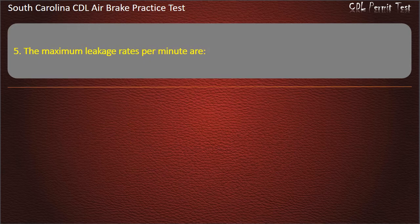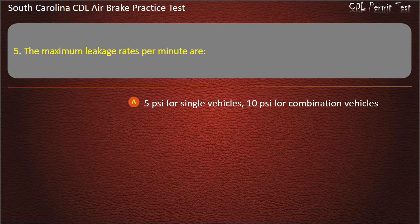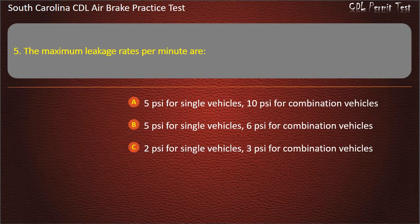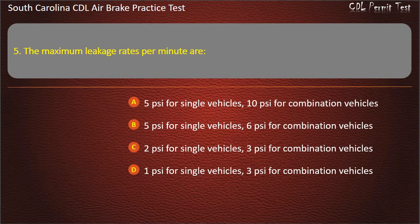Question 5: The maximum leakage rates per minute are: 5 pounds per square inch for single vehicles, 10 pounds per square inch for combination vehicles; or 2 pounds per square inch for single vehicles, 3 pounds per square inch for combination vehicles; or 1 lb per square inch for single vehicles, 3 lb per square inch for combination vehicles. Answer: 2 lb per square inch for single vehicles, 3 lb per square inch for combination vehicles.